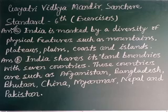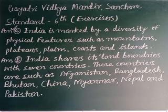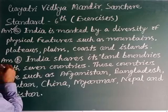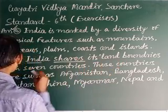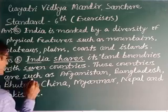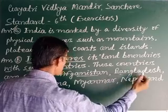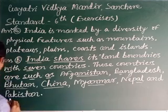These countries are Afghanistan, Pakistan, China, Nepal, Bhutan, Bangladesh and Myanmar. When we write the answer in grammatical format: India shares its land boundaries with 7 countries. These countries are Afghanistan, Bangladesh, Bhutan, China, Myanmar, Nepal and Pakistan.